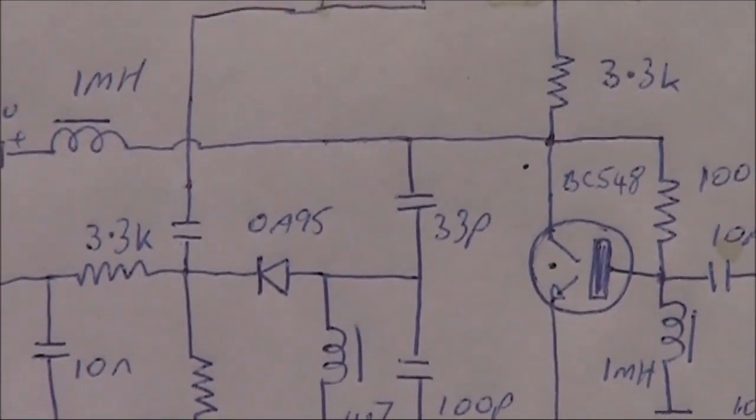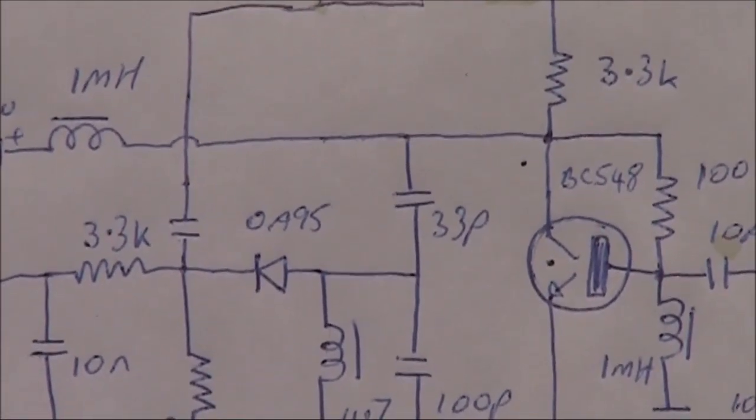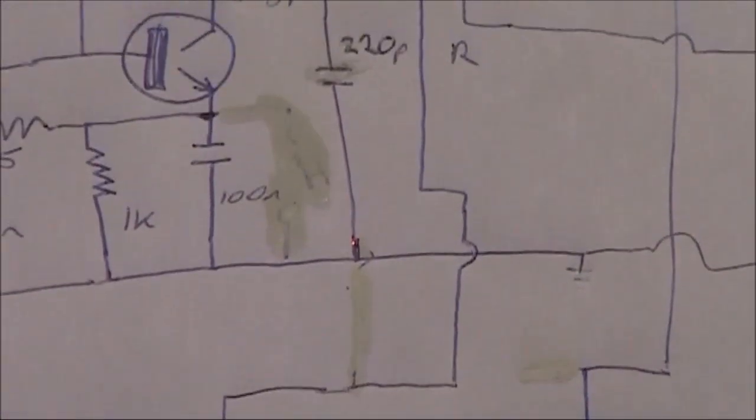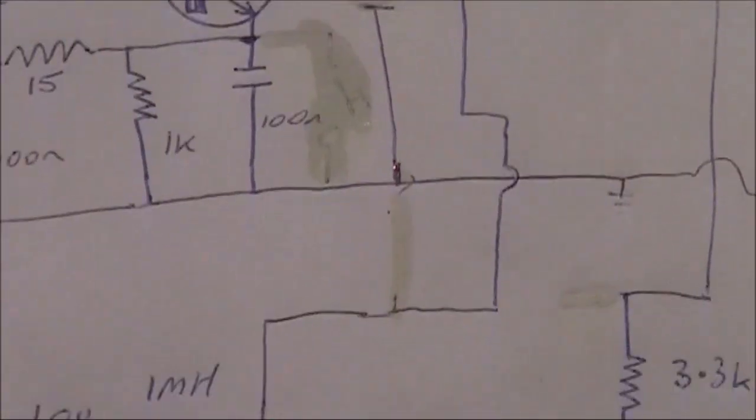The signal's fed back in order to do that. And there's also a germanium diode. I've got it as OA95, but it could be a 1N60, and that provides the mixing function.